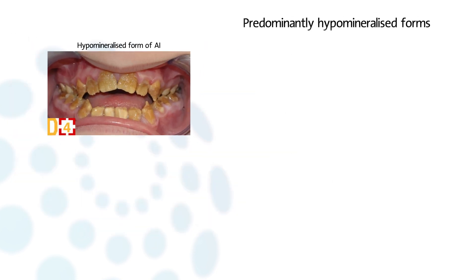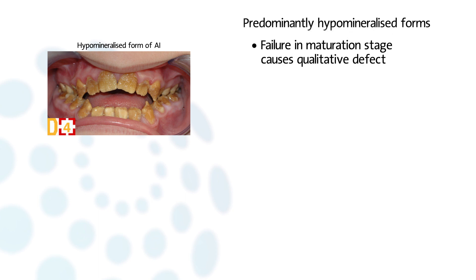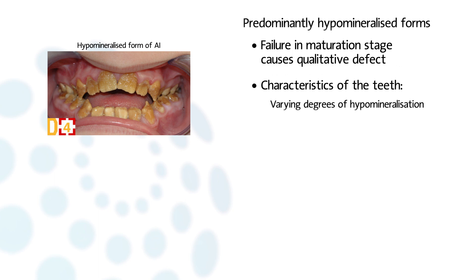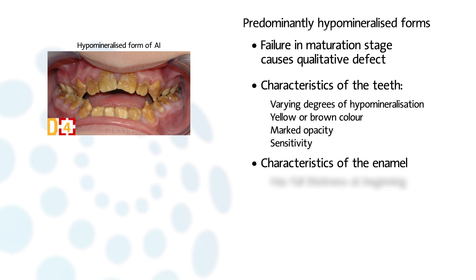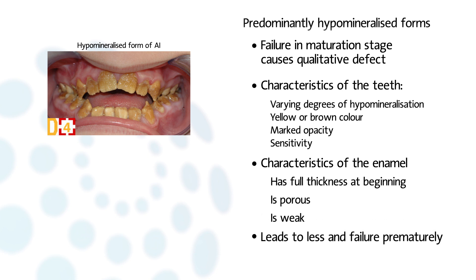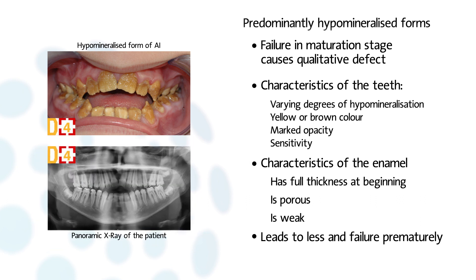Predominantly hypermineralized forms are a qualitative defect caused by maturation stage failure. The teeth exhibit varying degrees of hypermineralization with altered color, yellowish or brown, and marked opacity. These teeth are highly sensitive. The enamel has its full thickness at the beginning, but being porous and weak, it fails prematurely. This rapid post-eruptive enamel loss exposes the underlying dentine. Radiographically, it can be difficult to distinguish between enamel and dentine.